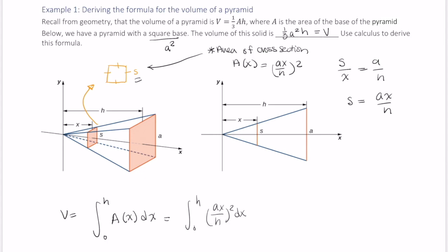That gives us this integral from 0 to h of ax over h quantity squared, with respect to x. A and h are just constants, so we can rewrite this by pulling out the a squared and the h squared in front. And we have the integral of x squared dx.